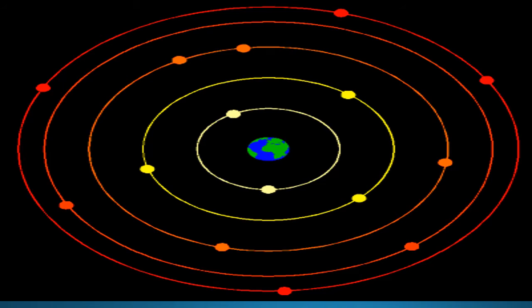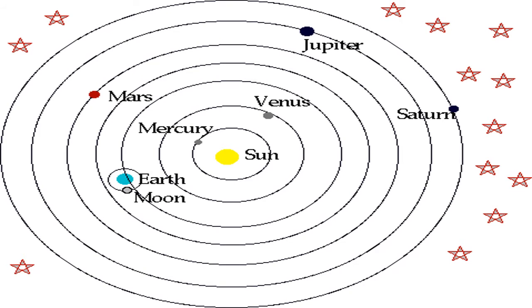In the geocentric model, the Earth is at the center and everything else orbits it. In the heliocentric model, the Sun is at the center and all the planets and the moon orbit the Sun — this is the correct model. The geocentric was the earliest model; the heliocentric was proposed later, and people resisted it, but over time as telescopes were used and more data was gathered, it was proven that the planets orbit the Sun.